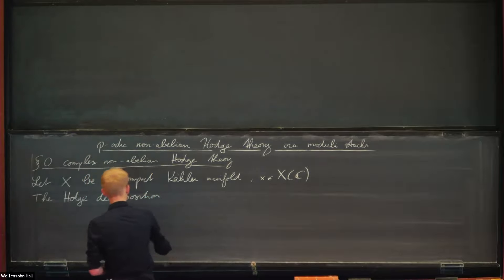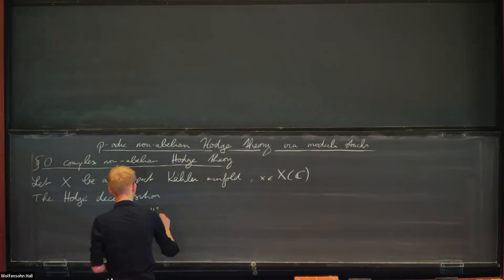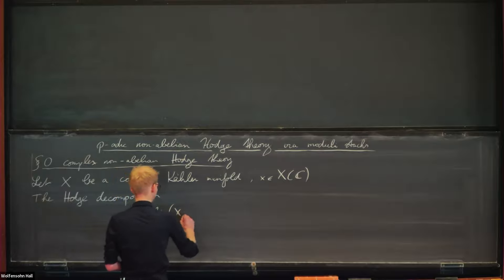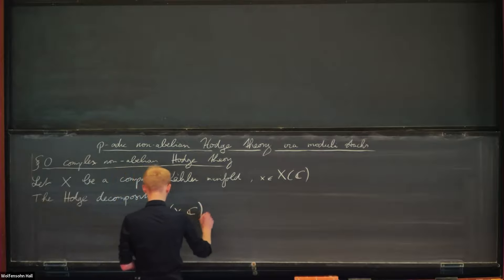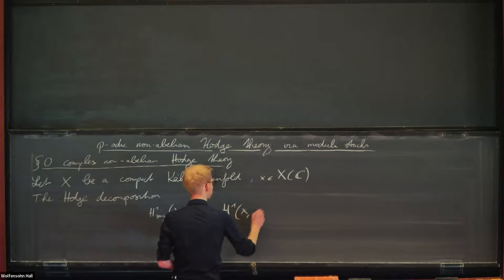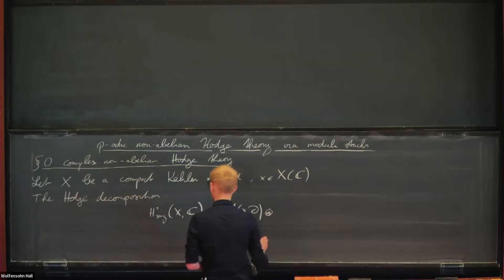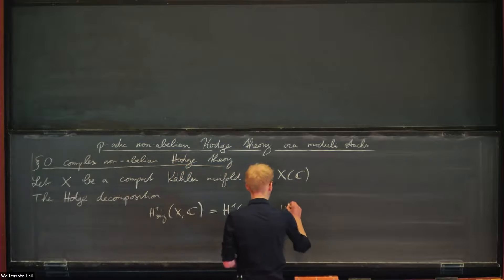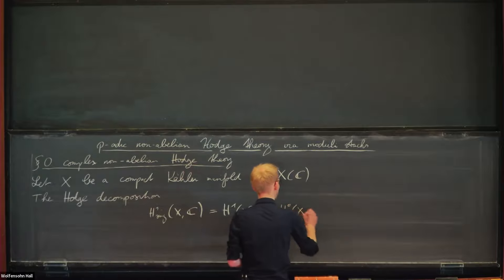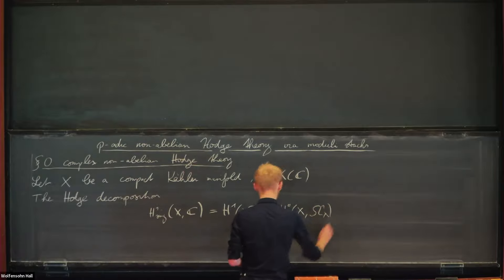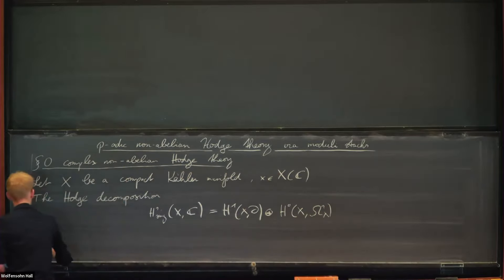Perhaps the first thing one can look at are some of the additive characters of this topological fundamental group, and these are described by the Hodge decomposition: singular cohomology on the one hand, and Hodge cohomology on the other side.